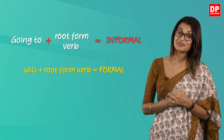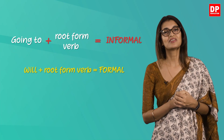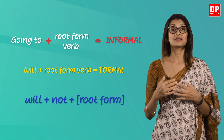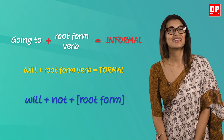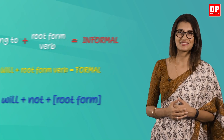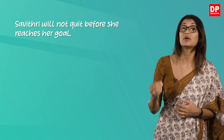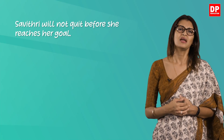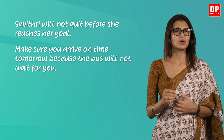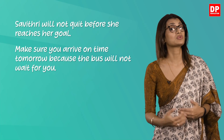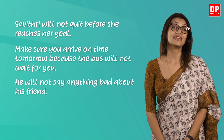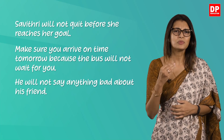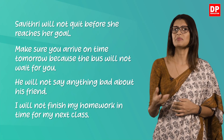So how do we make the simple future tense negative? To make the simple future tense negative, the formula is 'will' plus 'not' plus the root form. For example: 'Savitri will not quit before she reaches her goal.' 'The bus will not wait for you.' 'He will not say anything bad about his friend.' 'I will not finish my homework in time for my next class.' As you can see, the 'not' comes in between 'will' and the root form verb.